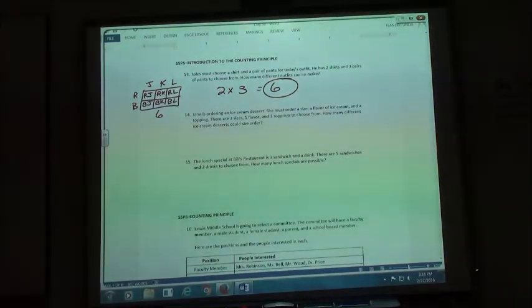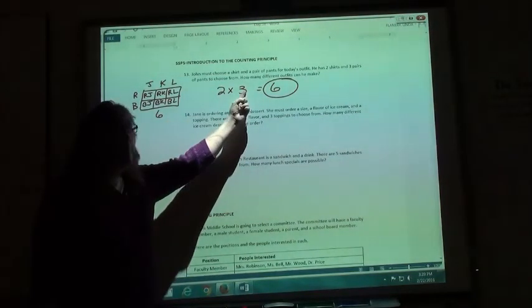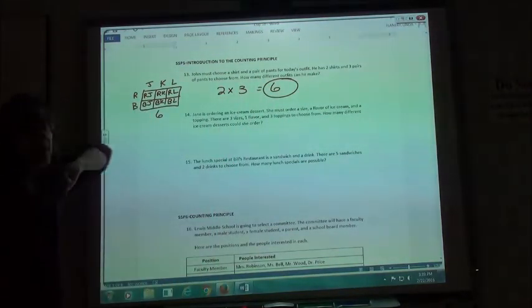So, fundamental counting principle just says I take the number of ways I can do the first thing, times the number of ways I can do the second thing, and I get the total number of ways I can do them.